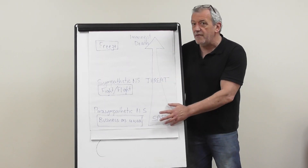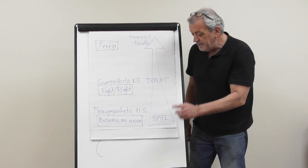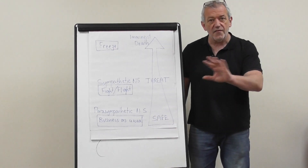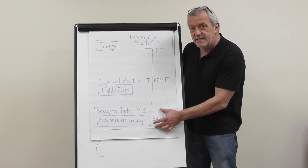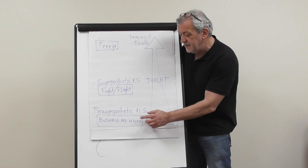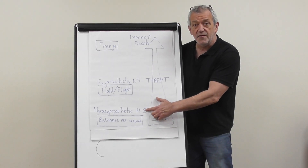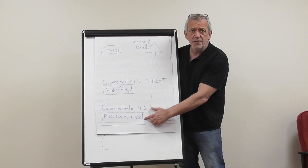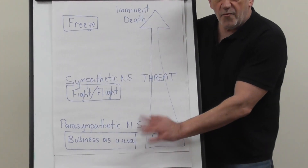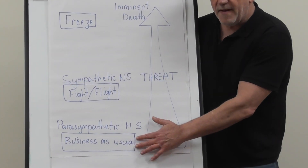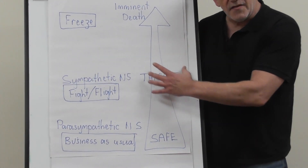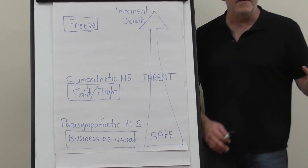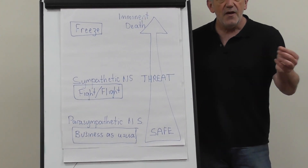This is a simple diagram to explain this. Safety means there are no immediate threats. When we're safe, we exist in what's called our parasympathetic nervous system — a big word for 'business as usual.' We'll get to what that means when there's a threat, because we can't guarantee a safe environment.